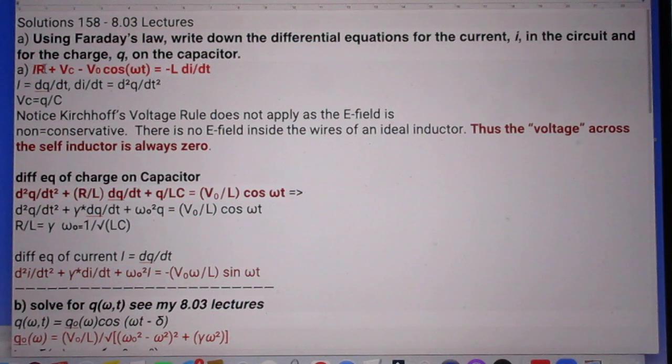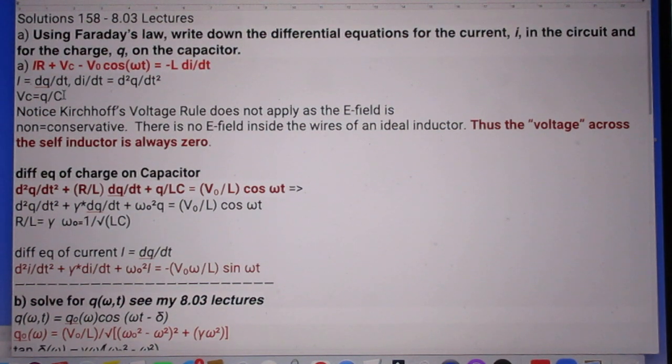So this is Ohm's law. Potential difference over the capacitor. Here is the potential difference over the resistor. And this is the potential difference over the capacitor. This is the driving voltage, the driving power is minus L di/dt. I is dq/dt and the voltage over the capacitor is q divided by C. Notice that Kirchhoff's voltage rule does not apply as the E field is non-conservative. There is no E field inside the wires of an ideal conductor. Thus the voltage across the self-inductor is always zero.